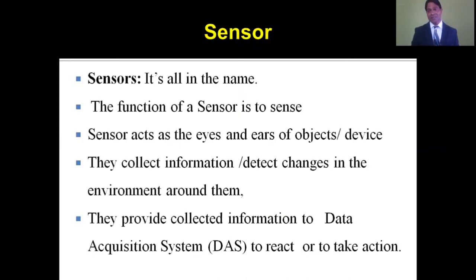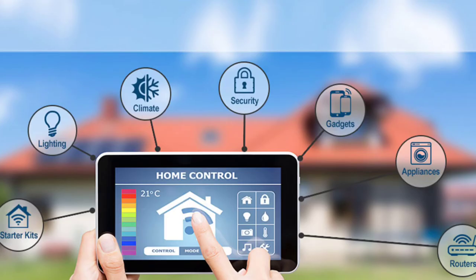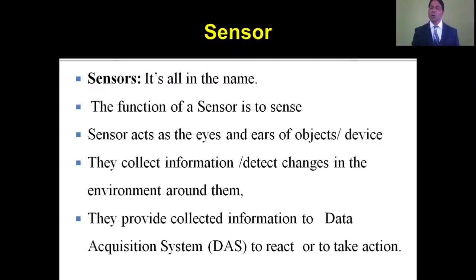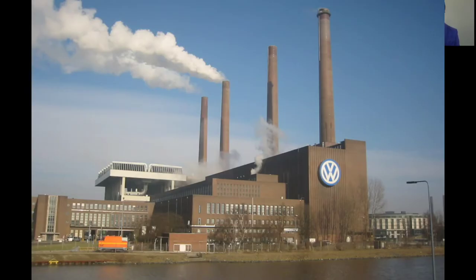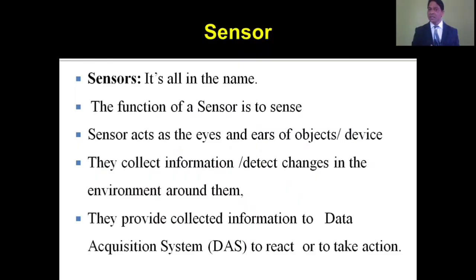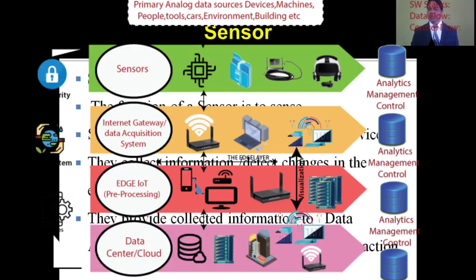The function of a sensor is to sense its environment. Sensors act as the eyes and ears of objects or devices. They collect information or detect changes in the environment around them, and provide that collected information to a data acquisition system to react or to take action.